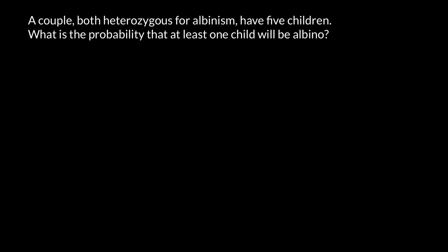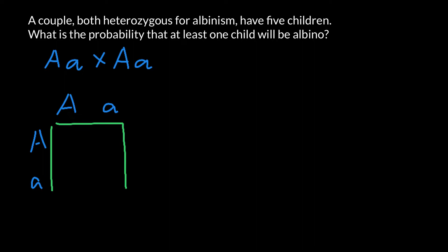Let's start by listing the genotypes of the parents. We are crossing two parents who are both heterozygous. So here is the cross, and now let's build a simple Punnett square — one parent on top, another parent on the side — and let's see what the probability would be for this couple to have children who are affected or unaffected.